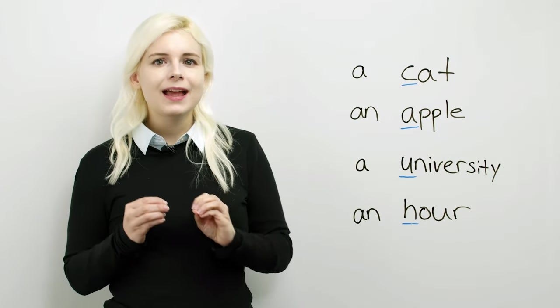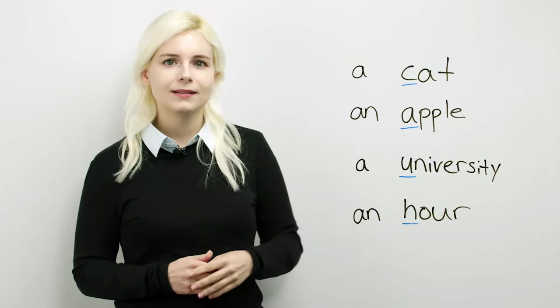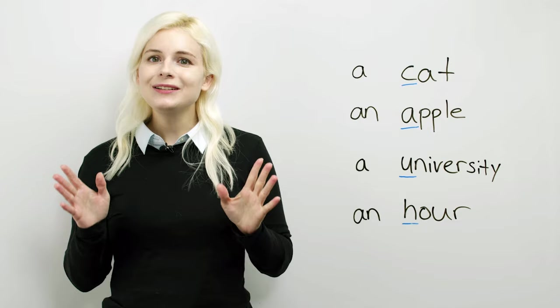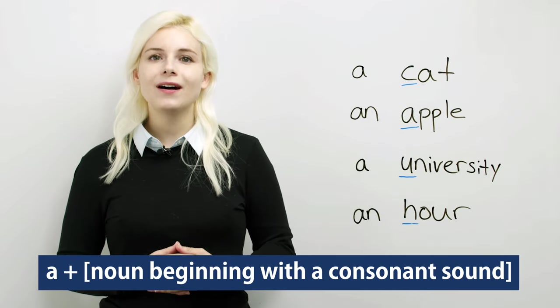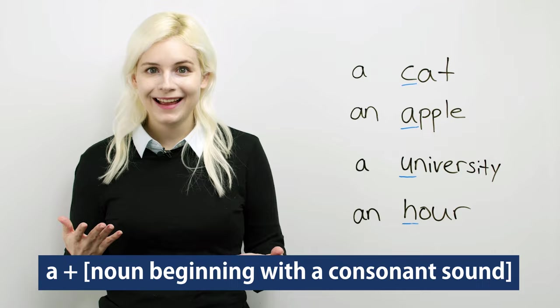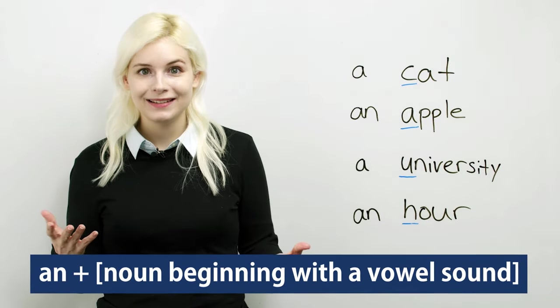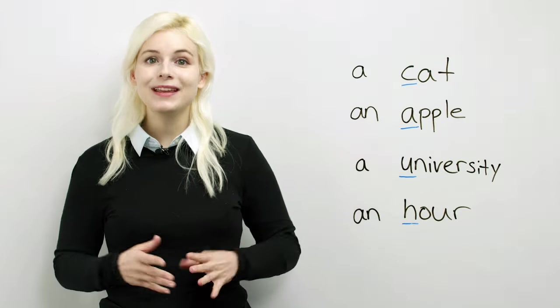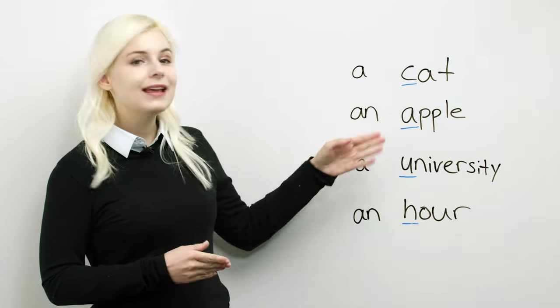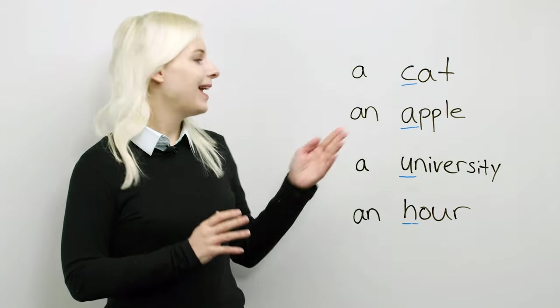You can see a before a vowel and an before a consonant. The real rule is: a comes before a consonant sound, and an comes before a vowel sound.